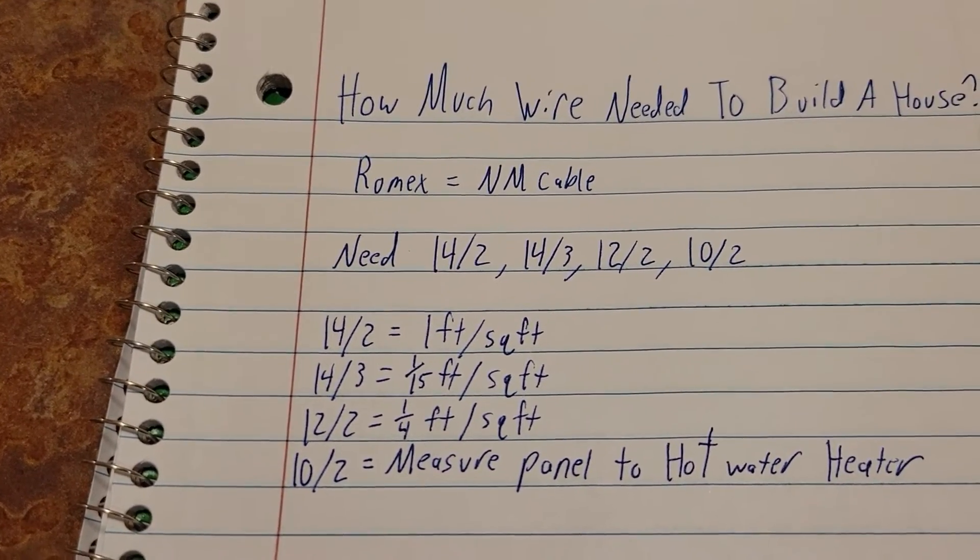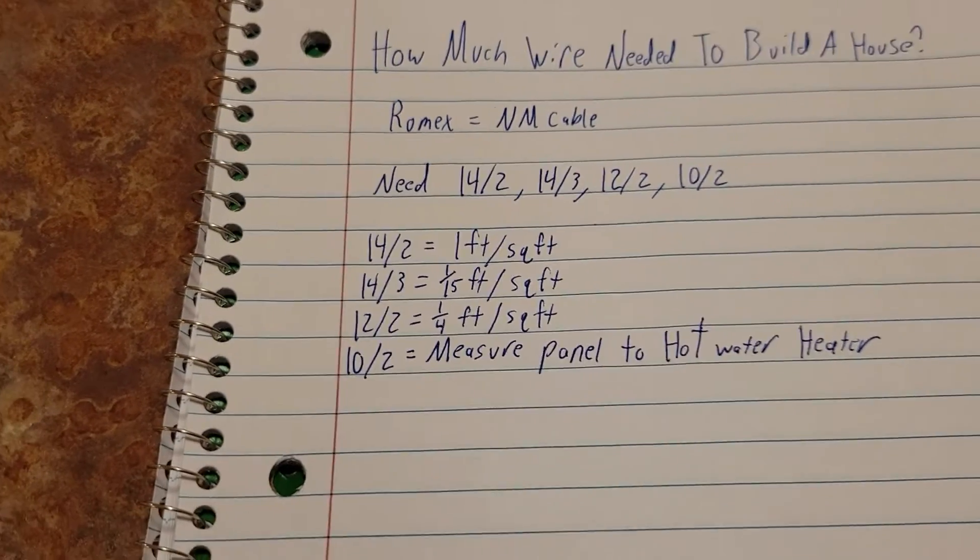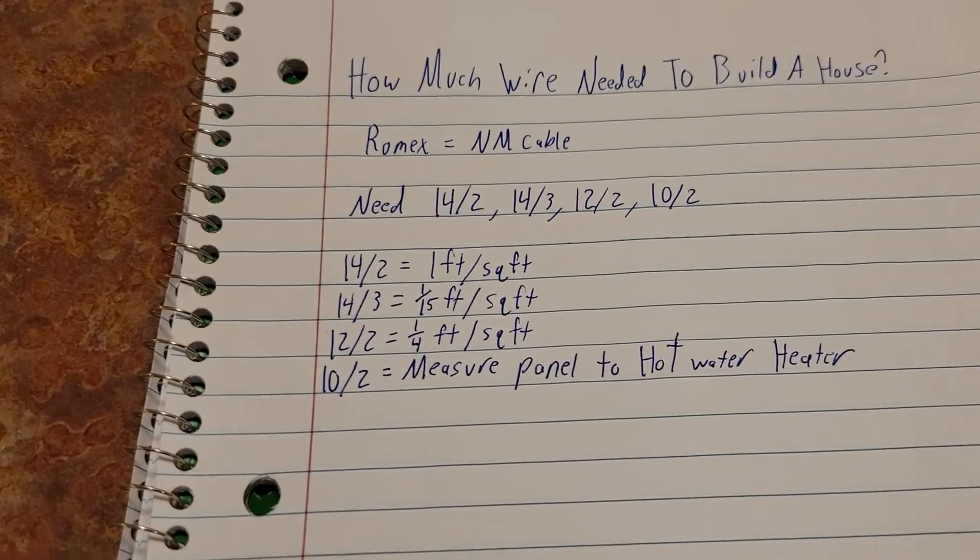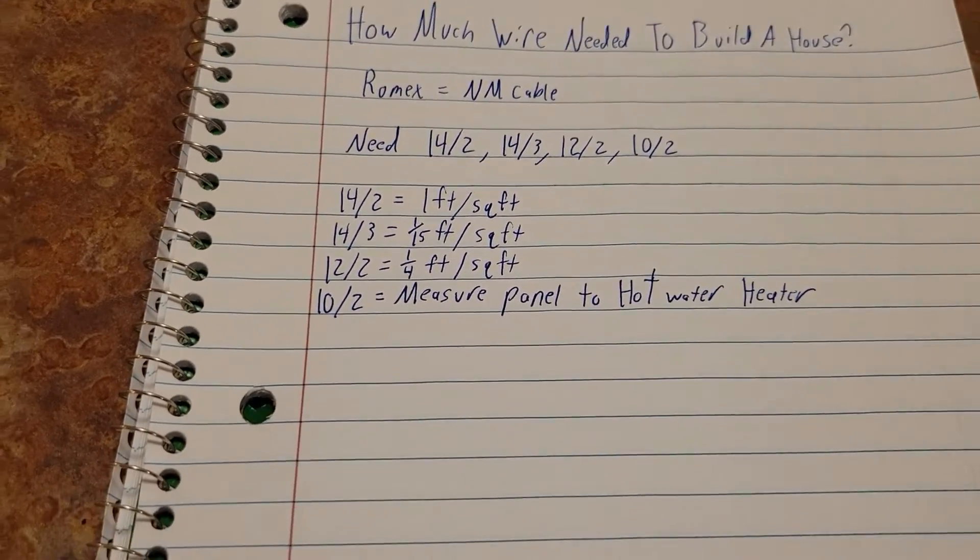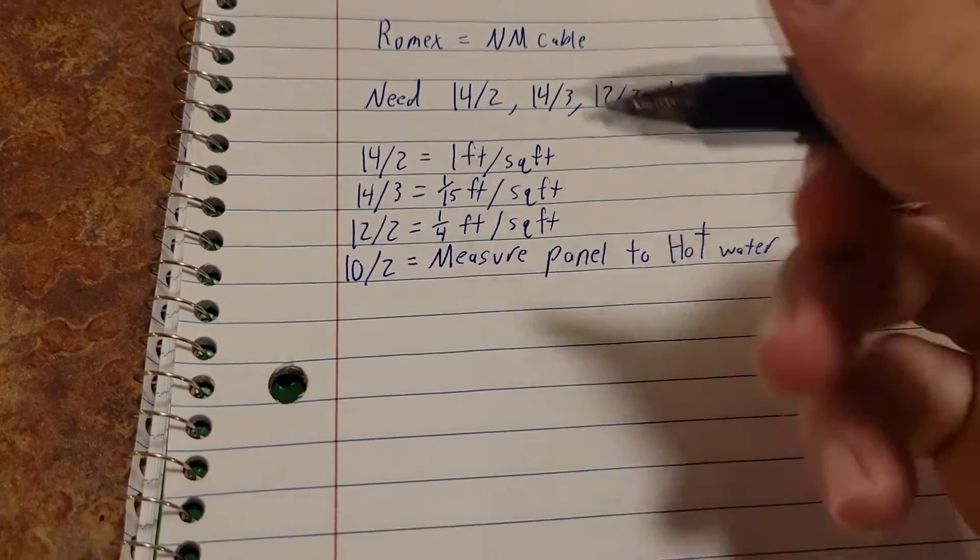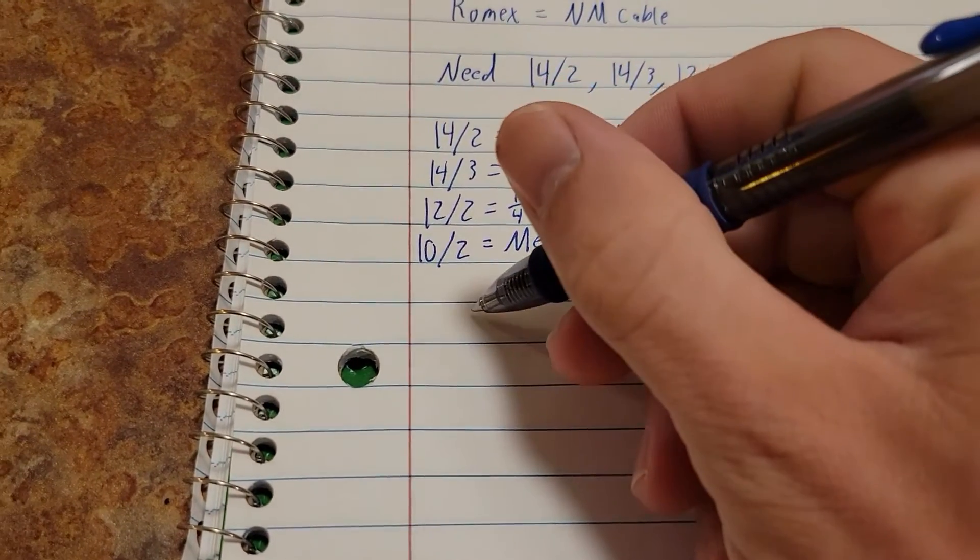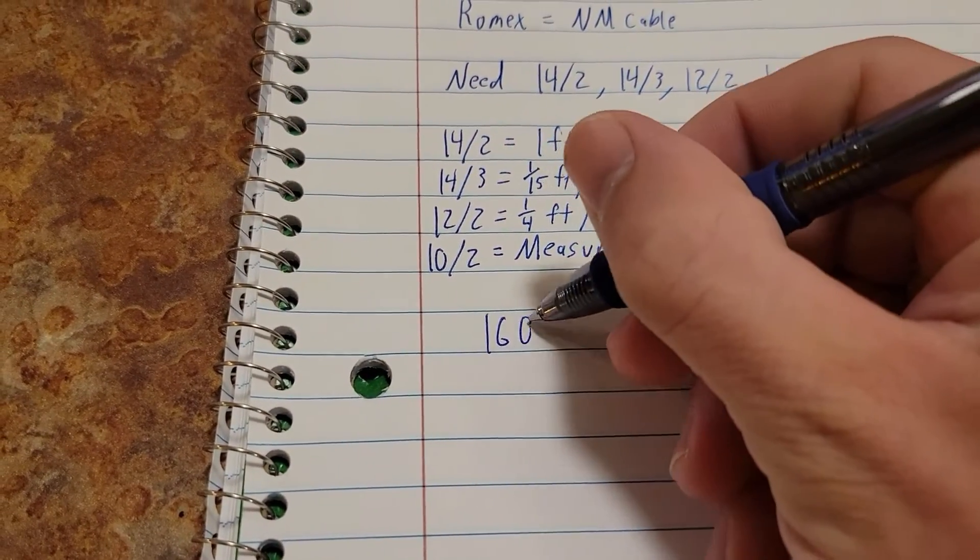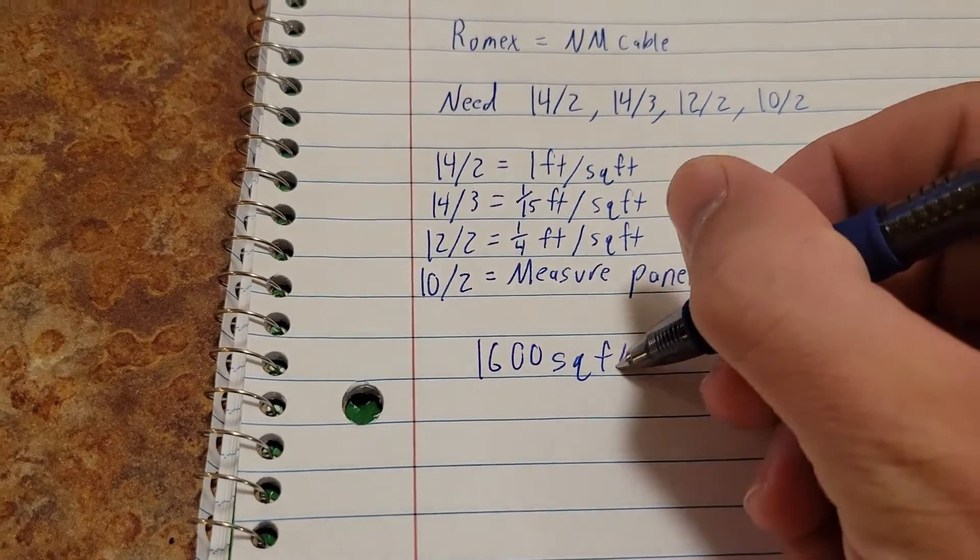So now we're going to go ahead and do some math. We're going to say that we're going to build a 1600 square foot house.